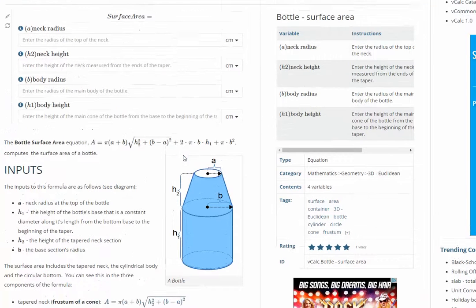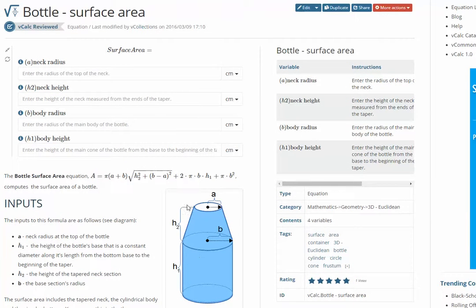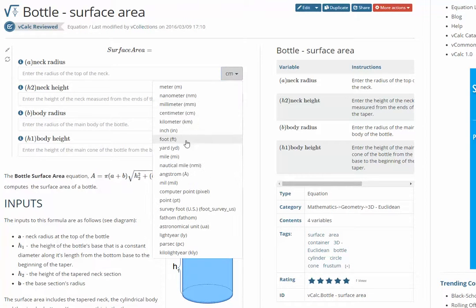So in order to make the calculation, you need to enter in these dimensions. VCalc lets you enter in the dimensions in different units. So the default right now is centimeters, but you can go to inches or other type units.